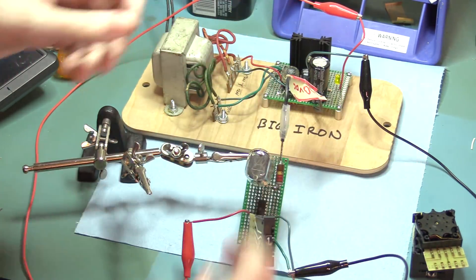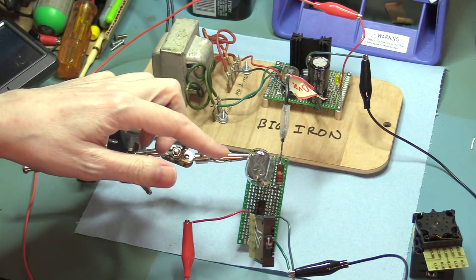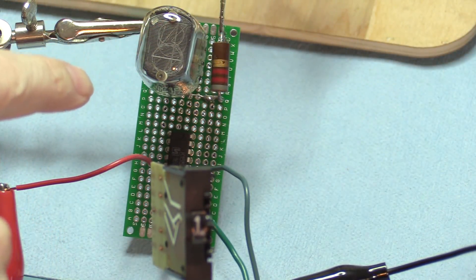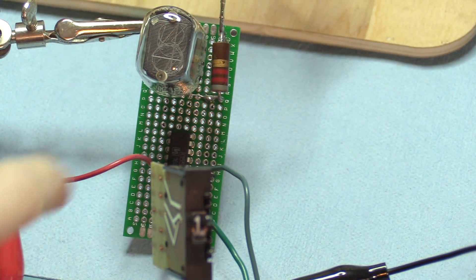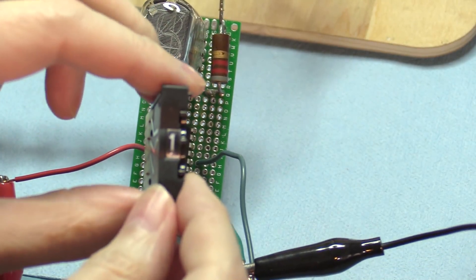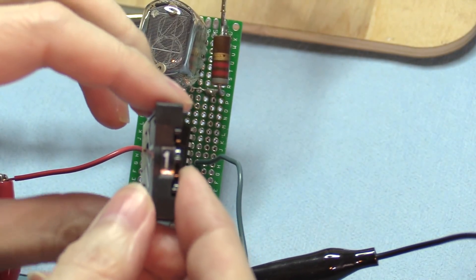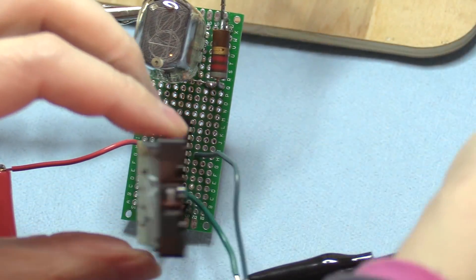I've got my little Nixie module here hooked up, a little National Nixie tube and a little driver down there, and hooked up to it I've got this little thumbwheel BCD switch. They look like this.